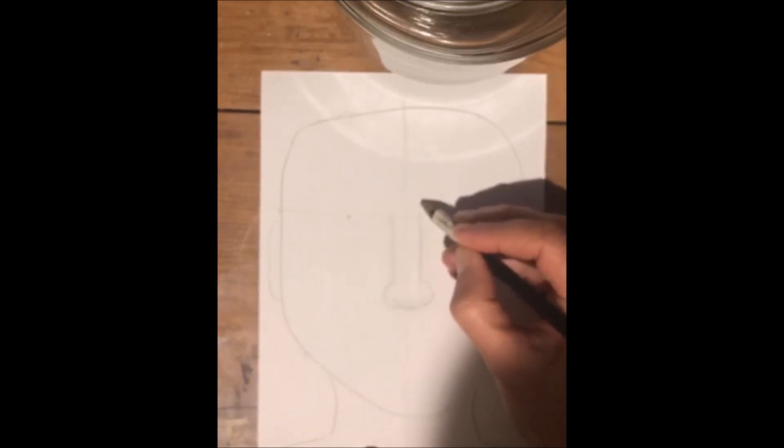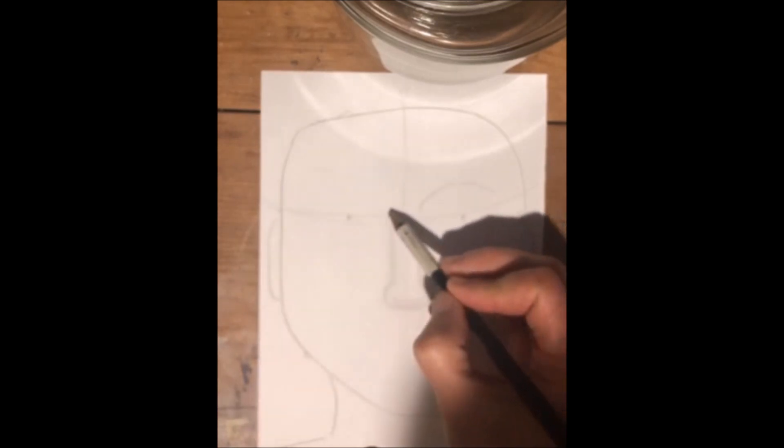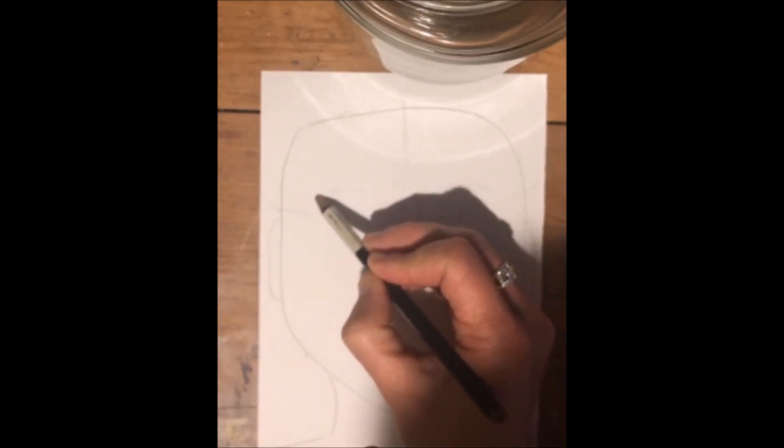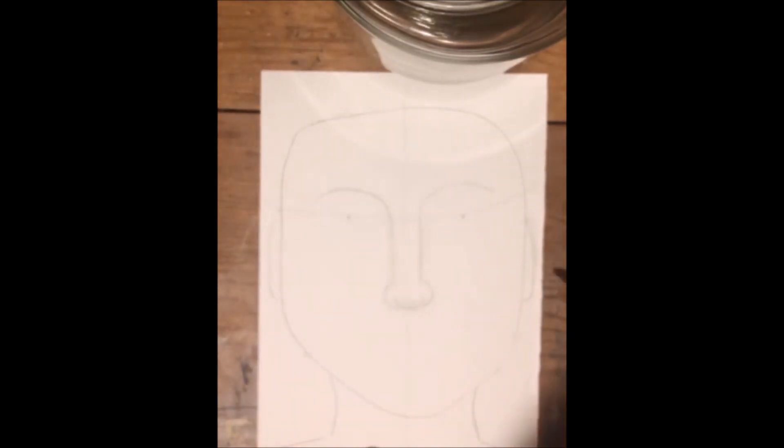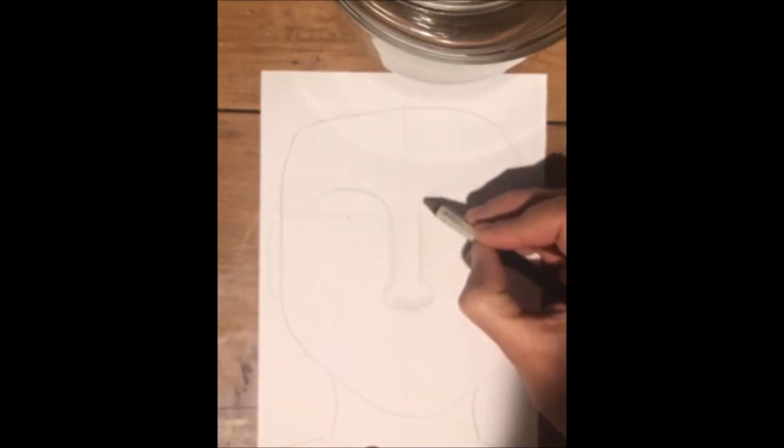Then I'm going to put in my eyebrows because they're important guides too. Our nose comes up into our eyebrows, so I'm going to do a heel over the top of my eyebrow and another one on the other side, because our faces are symmetrical, which means they are the same on both sides. Now eyebrows just aren't lines—they're made up of lots of little hairs, so shape your little hairs on.